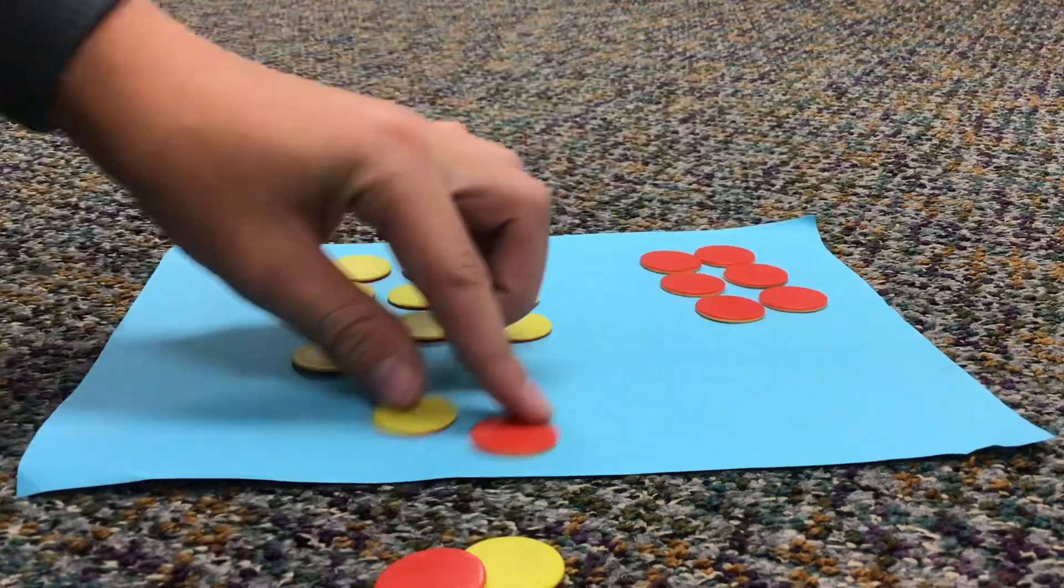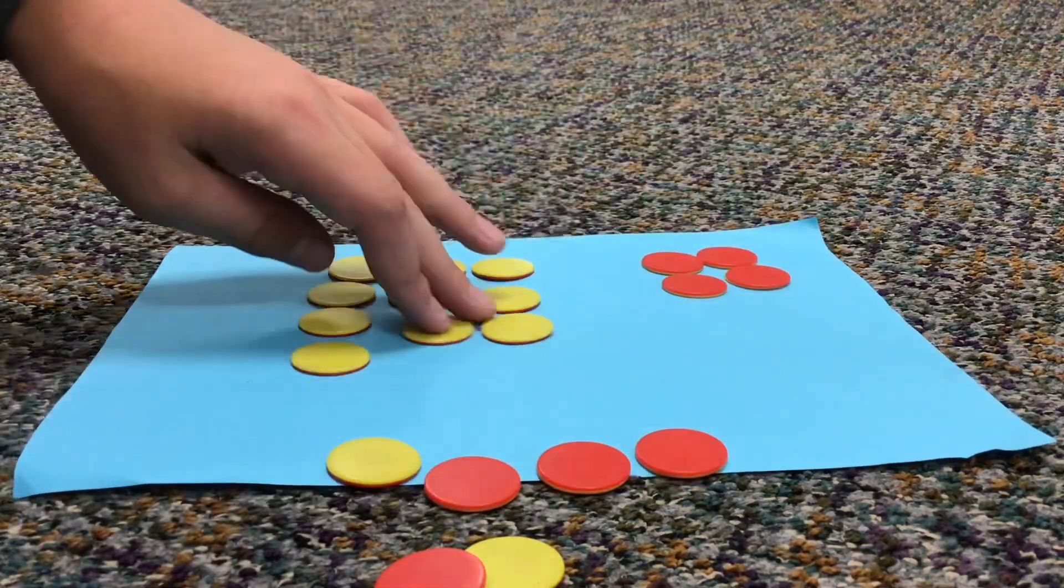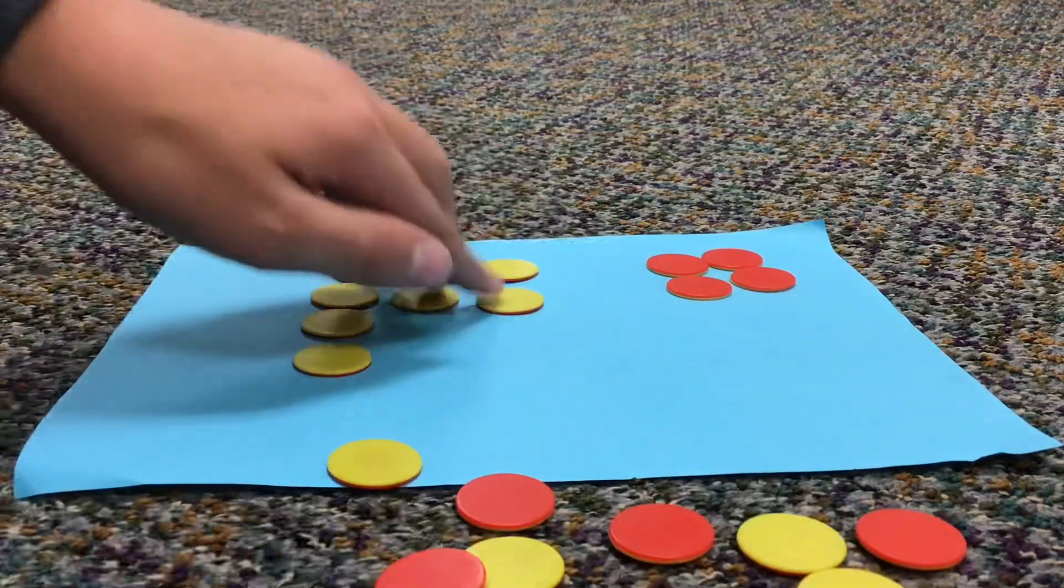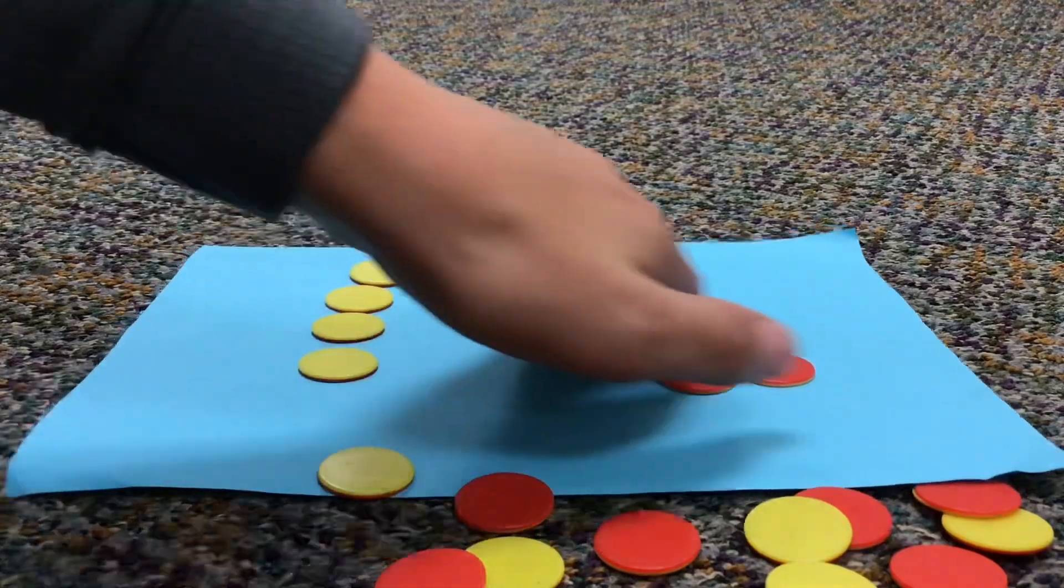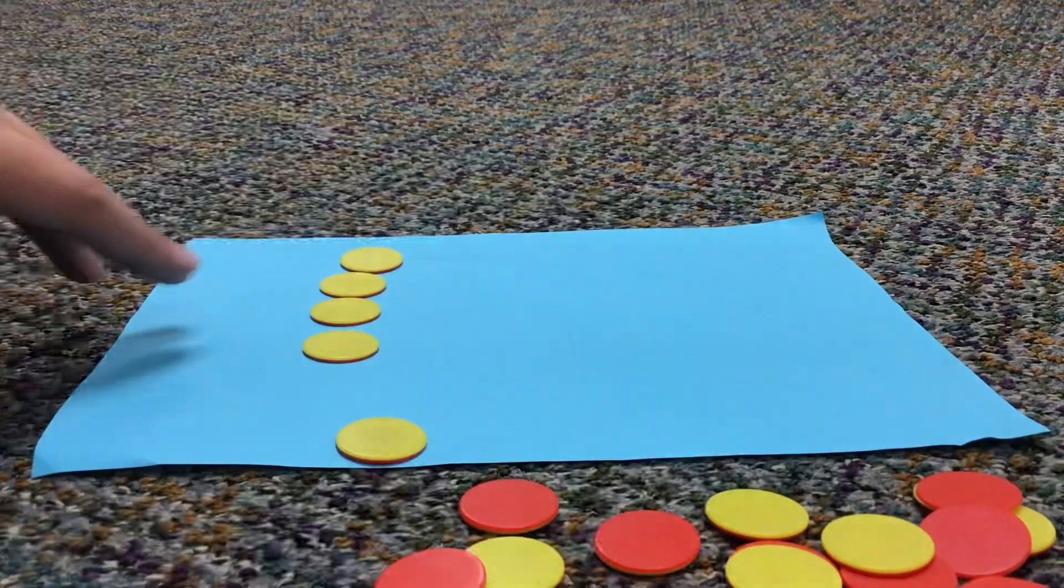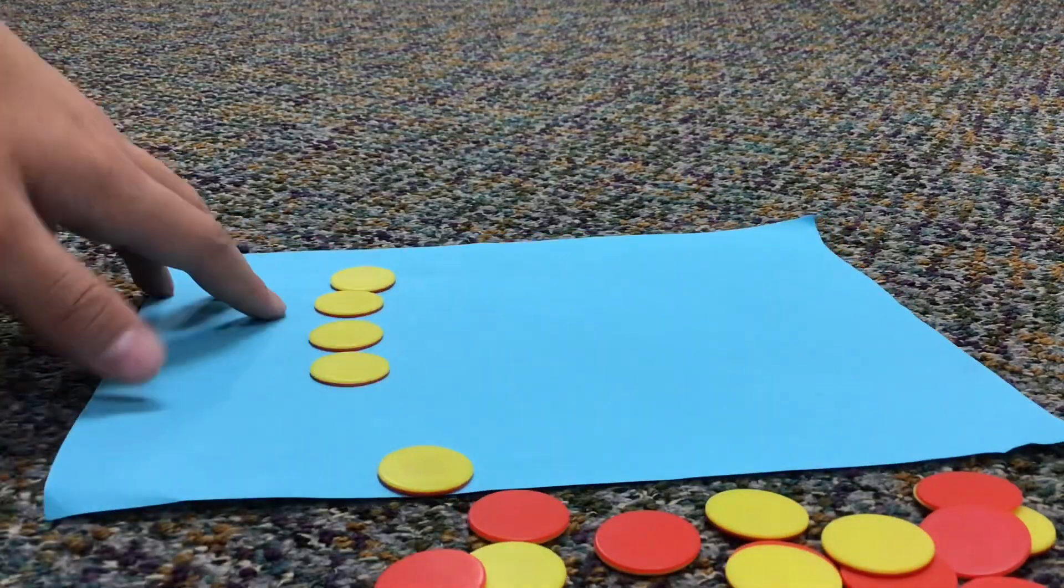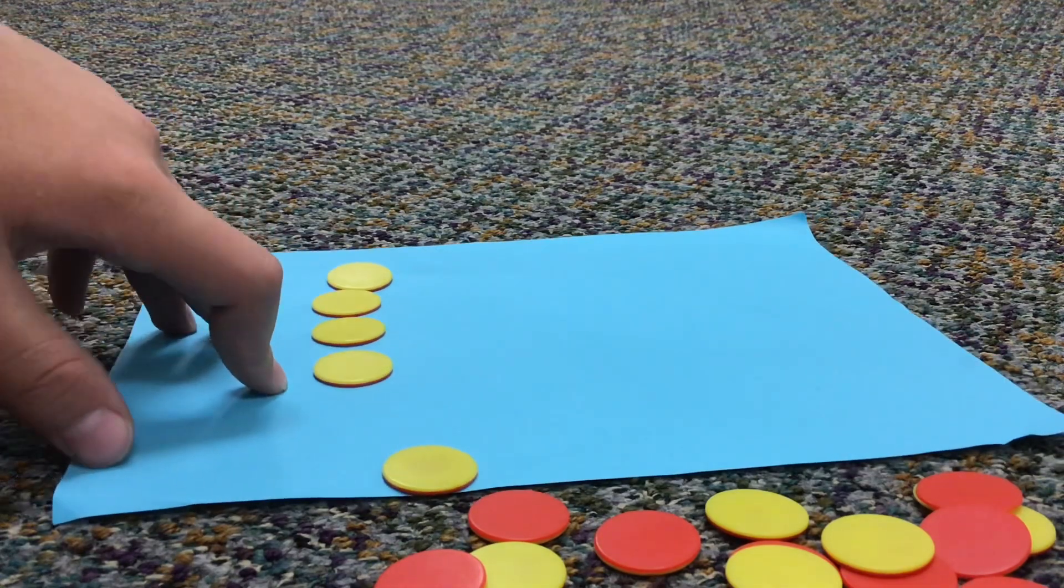So if we keep on taking these two together and making pairs of zero, then eventually we'll have no more negative chips left. So right now, as you can see, we have four positive chips left once you equalize everything out.